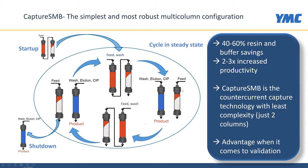The process can go on continuously until all the starting material is used. To exit the process, we run a shutdown step where the partially loaded column is washed, eluted, and cleaned. This process gives you 40 to 60 percent resin and buffer savings due to the overloading of the first column, and it increases productivity typically by a factor of two to three.